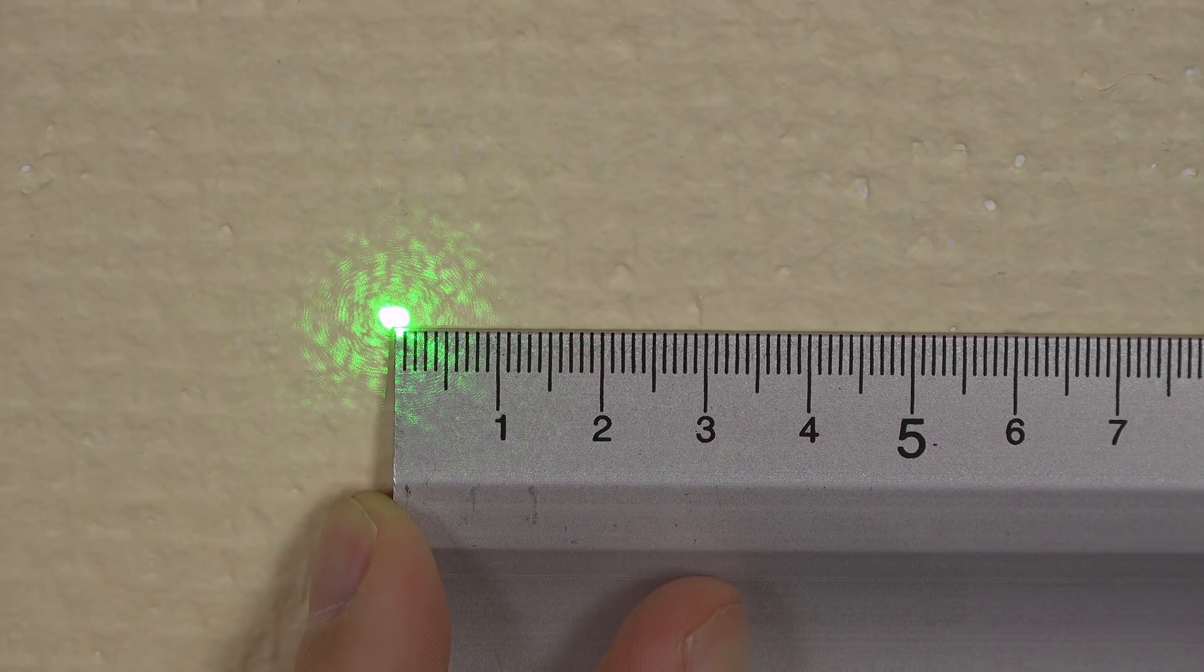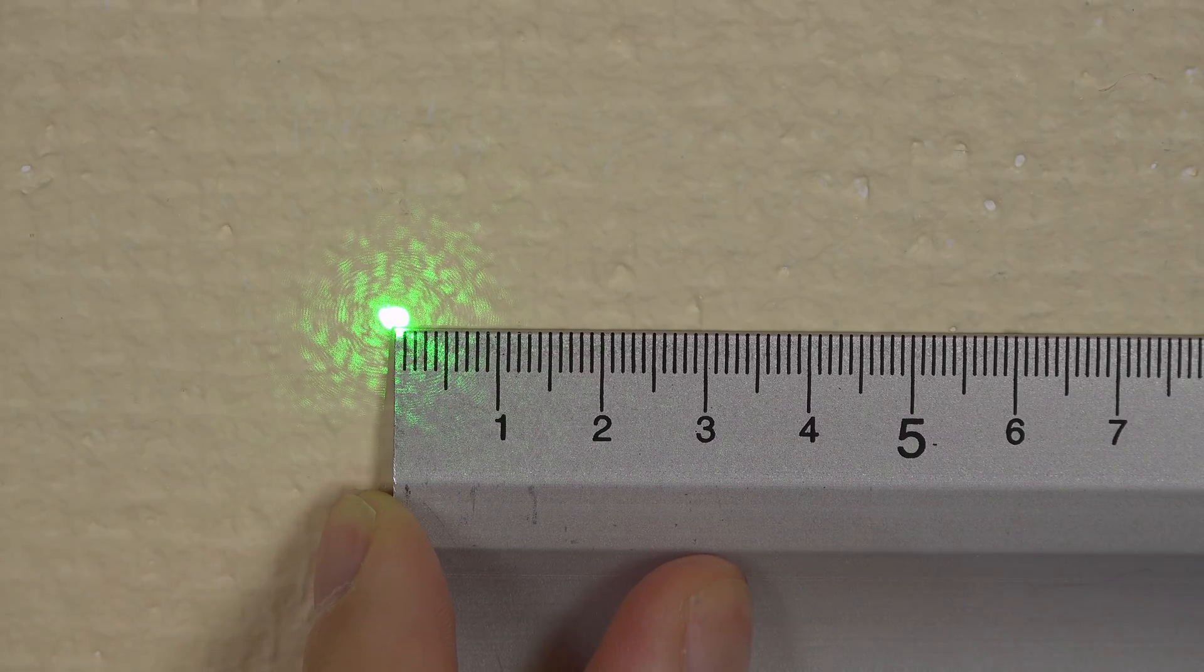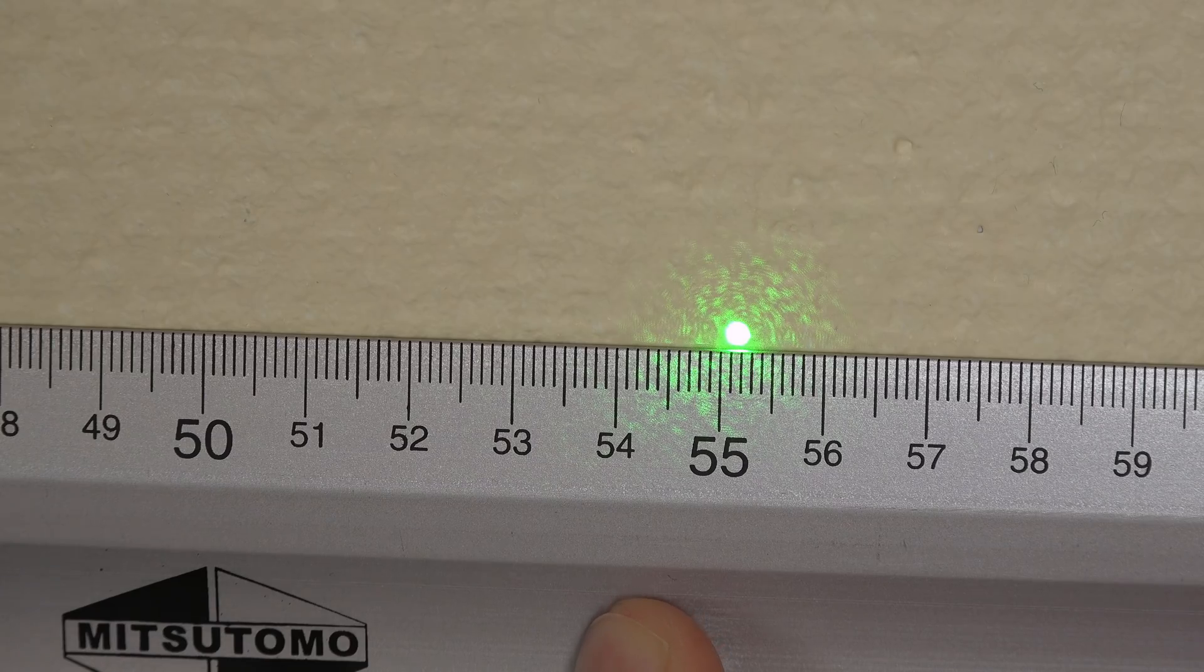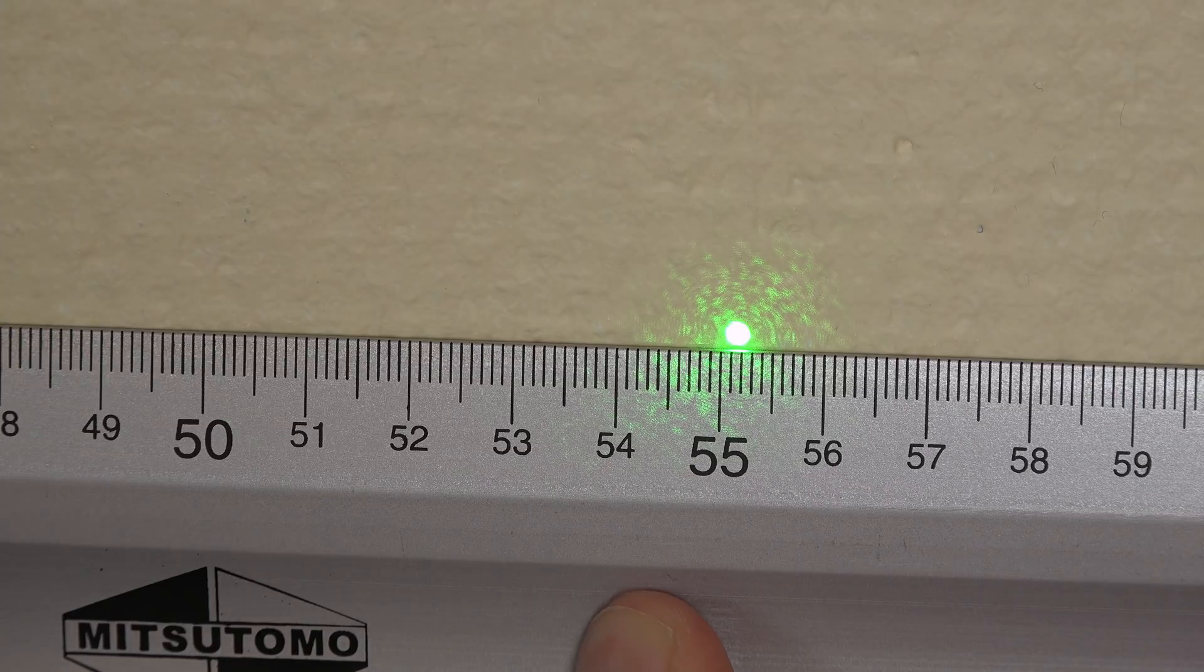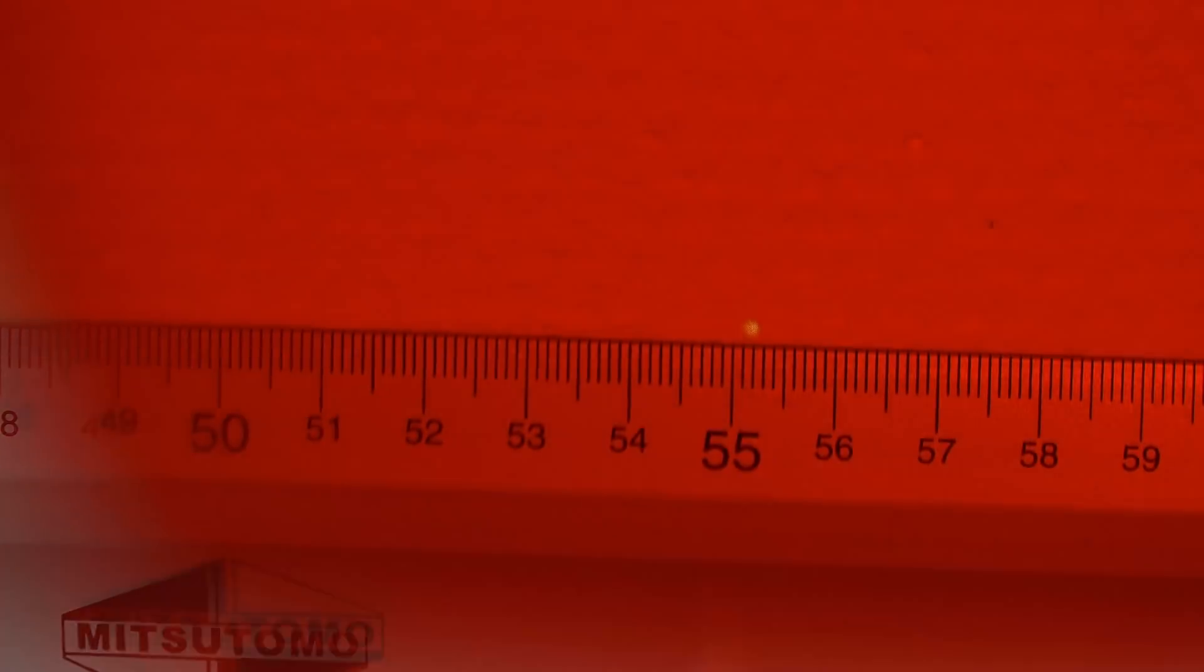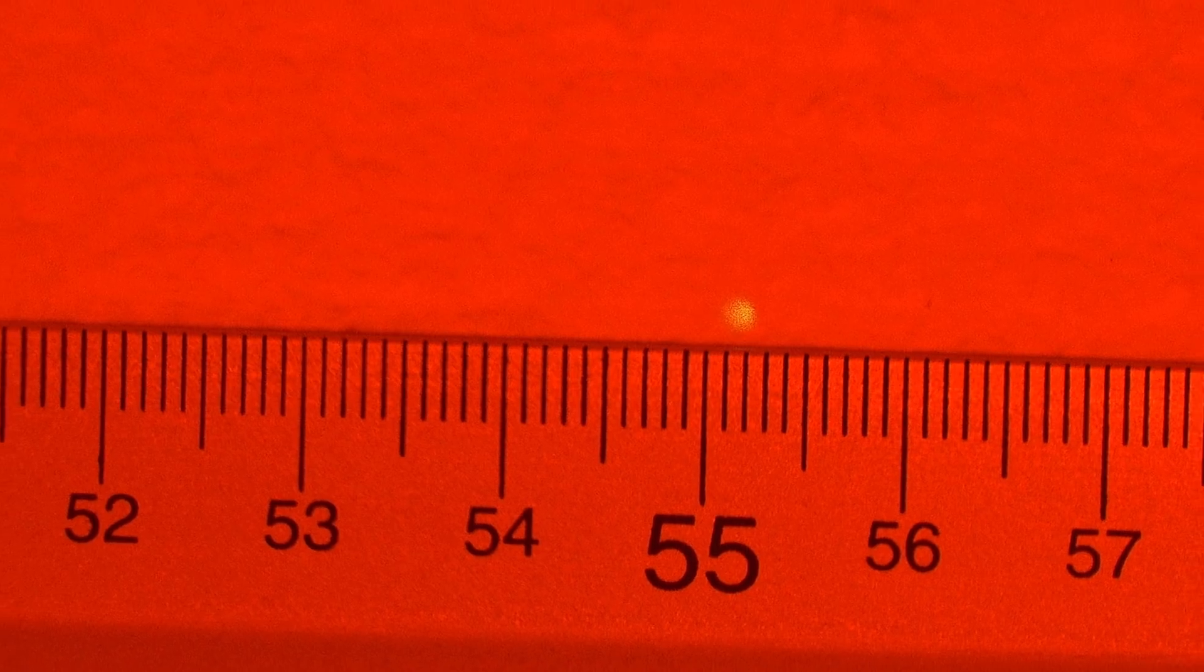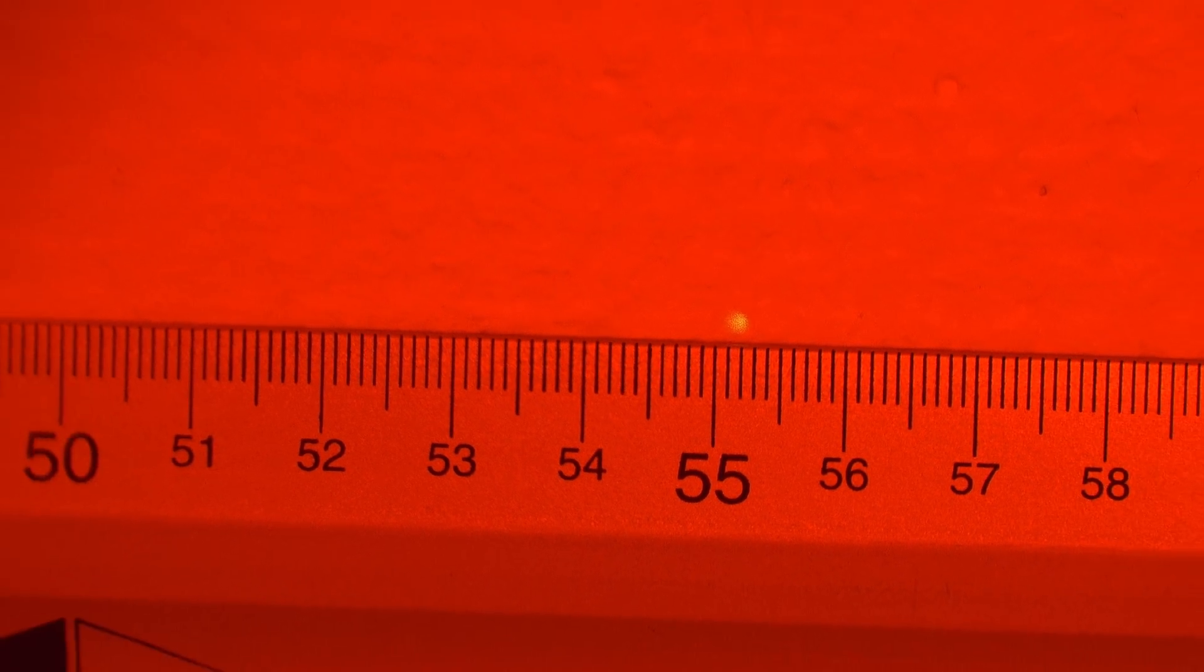For the calculations I need to know the distance between the first dots on each side of the center dot. The centers of the dots are a little easier to find precisely with safety goggles on since the dots are much smaller. In this case it's between 55.1 and 55.2 centimeters. Let's call it 55.15 centimeters.